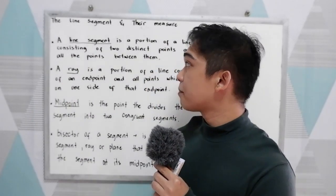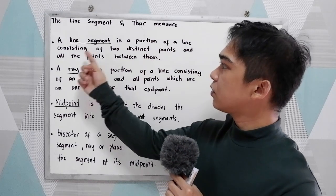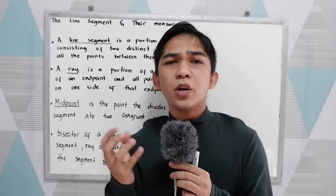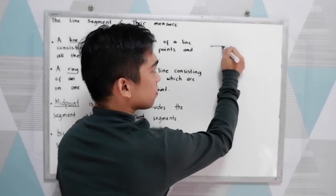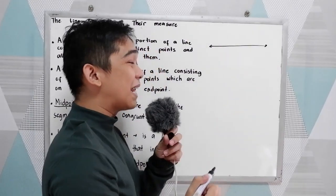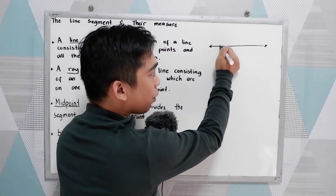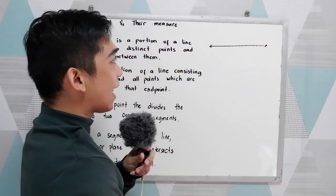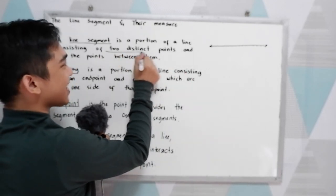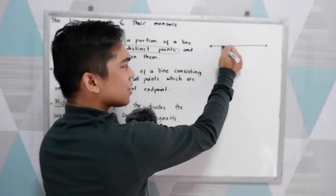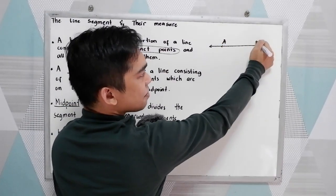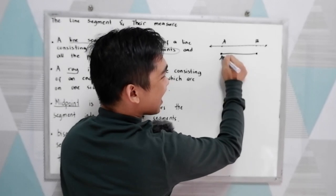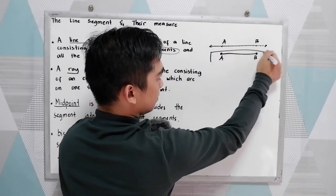First, we have a line segment. It is a portion of a line consisting of two distinct points and all points between them. We know that a line consists of infinitely many points — that's why we have infinitely many points coming together to form a line. A line segment is a portion of a line with two distinct endpoints, let's say A and B. So this is an example of a line segment.